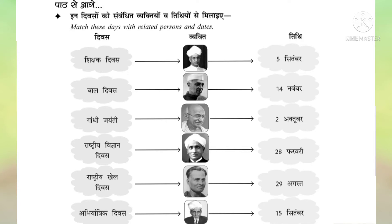Second: Rashtriya Vigyan Divas means National Science Day. We have to select the date and picture. The picture is Dr. C.V. Raman — the fourth picture. We match it with the fourth picture. National Science Day is celebrated on 29th August.